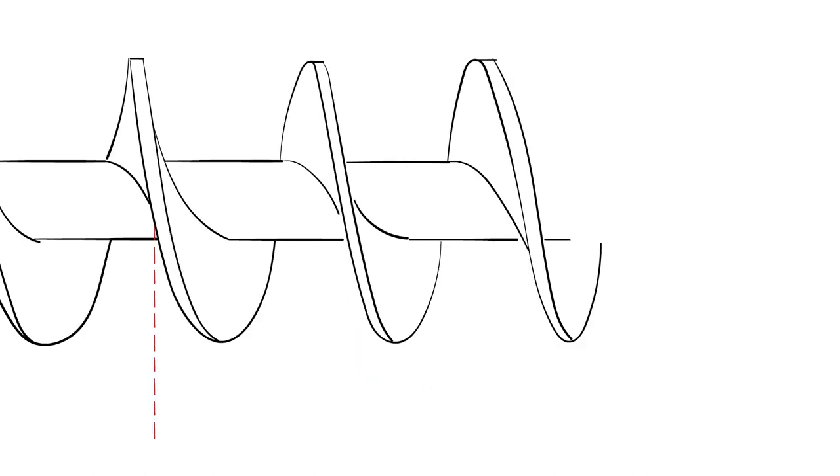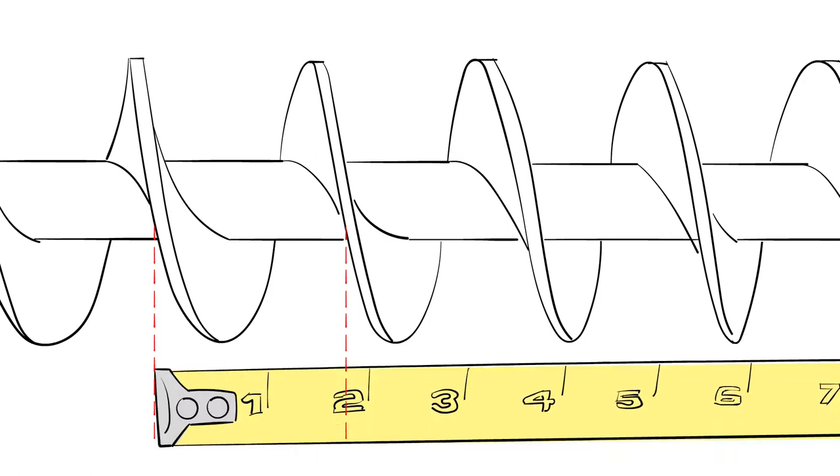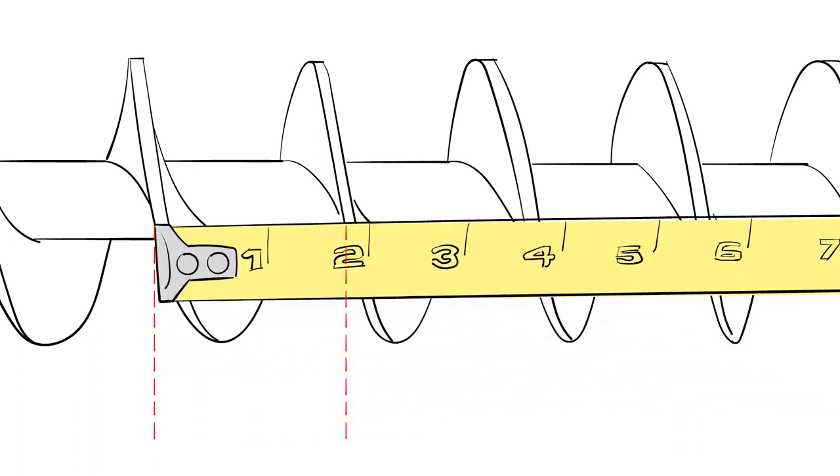measure from the outside of one spiral to the inside of the next spiral. Make sure to measure down the center line of the auger to get the most accurate measurement.